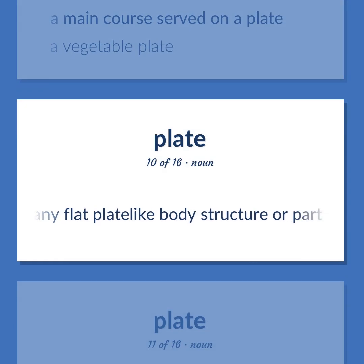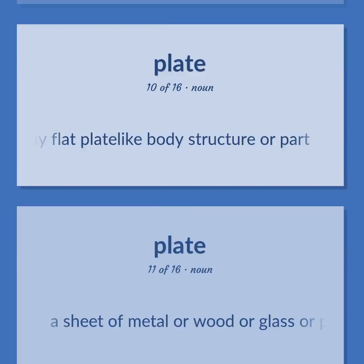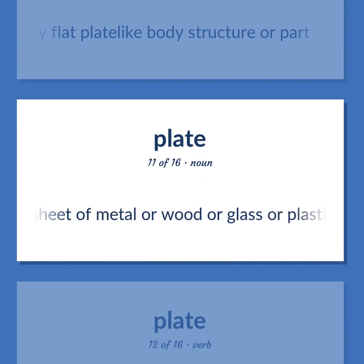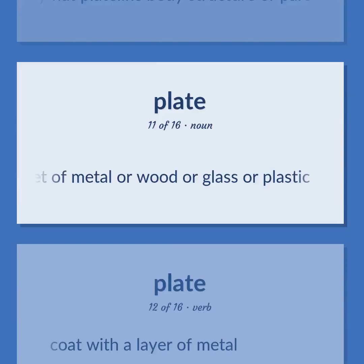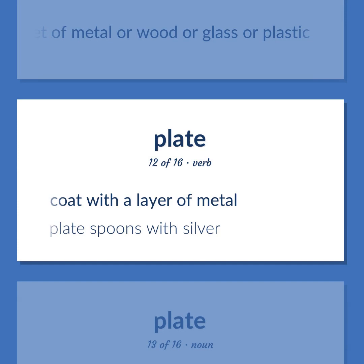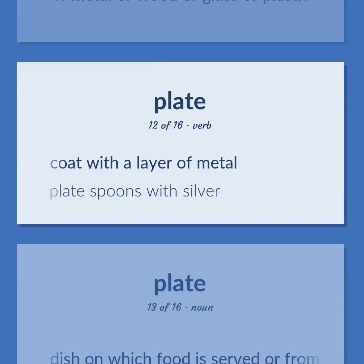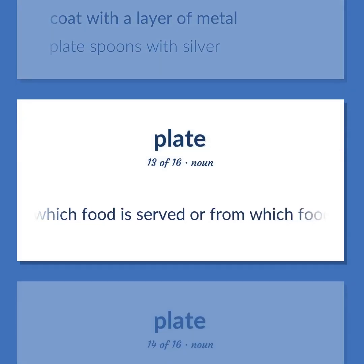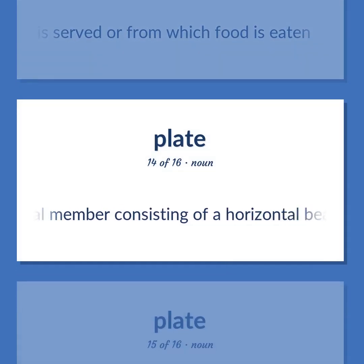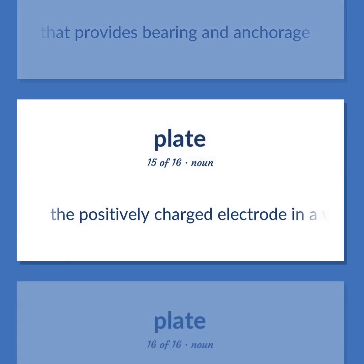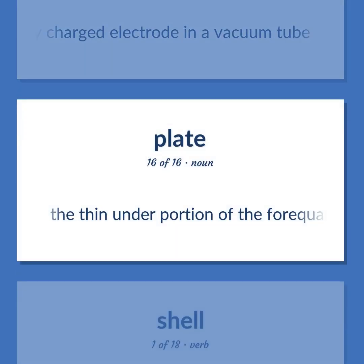Plate: Any flat plate-like body structure or part. A sheet of metal or wood or glass or plastic. Coat with a layer of metal — plate spoons with silver. Dish on which food is served or from which food is eaten. Structural member consisting of a horizontal beam that provides bearing and anchorage. The positively charged electrode in a vacuum tube. The thin under portion of the forecorder.